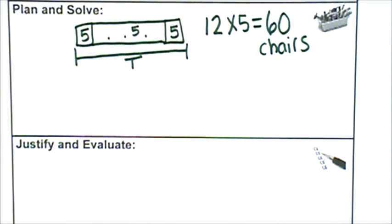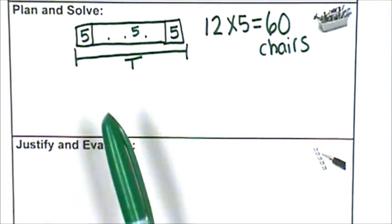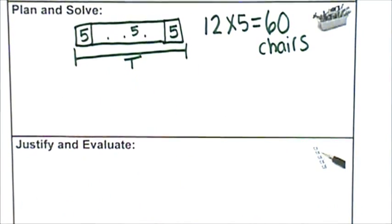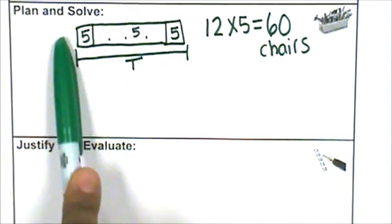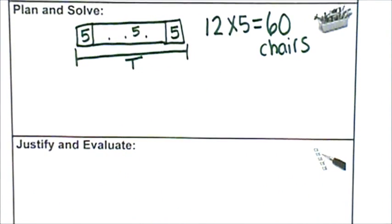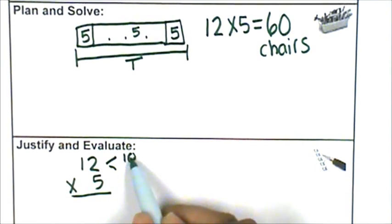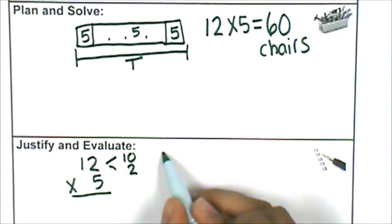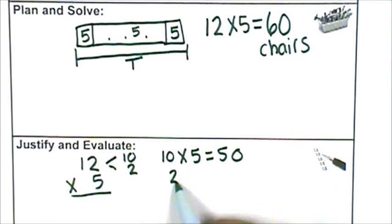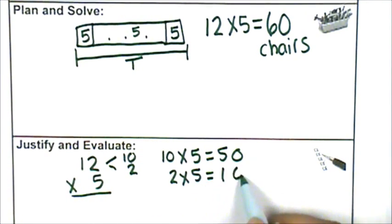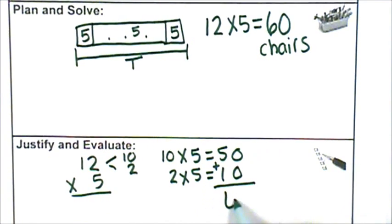Now I'm going to justify and evaluate my answer. How does my solution process help me answer the question? My picture shows there are 12 tables, and each table has 5 chairs, and that shows me all of the chairs in the library. Let me check my work: 12 is composed of 10 and 2. I know that 10 times 5 is 50, and 2 times 5 is 10. 50 plus 10 is 60. The answer is 60 chairs.